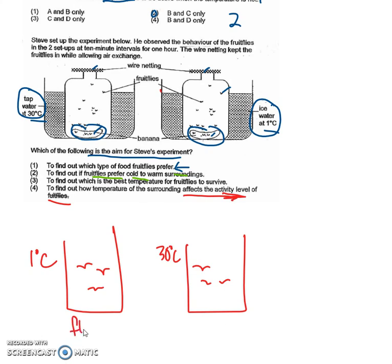If you're looking at the activity level, that means you want to see how many fruit flies are flying versus how many fruit flies are resting or not moving.